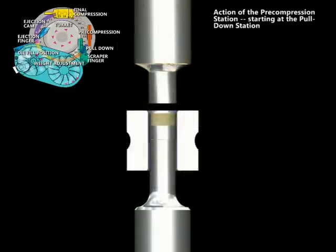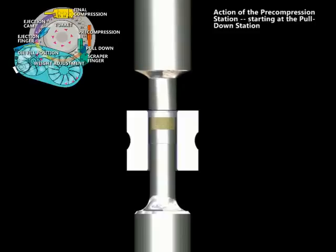The lowering of the powder column prevents any powder from being blown out of the die as the upper punch enters the die bore, thus preventing variations in tablet weight.